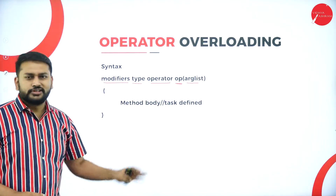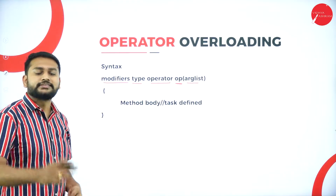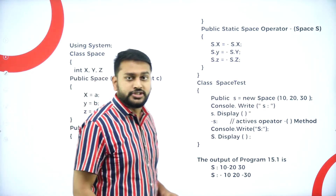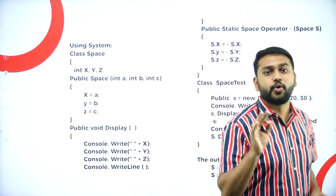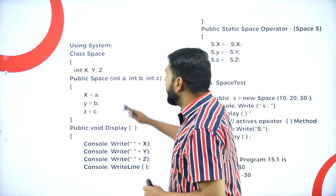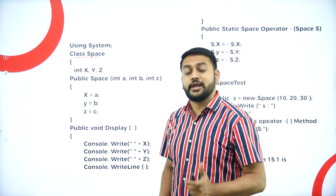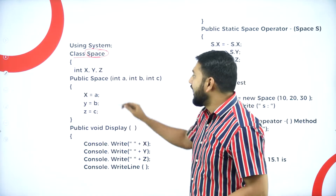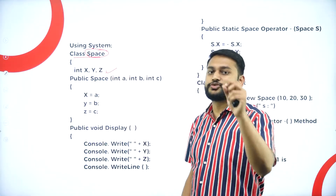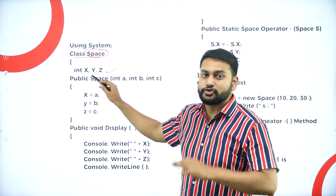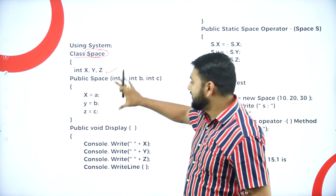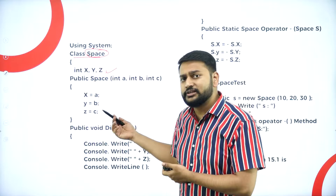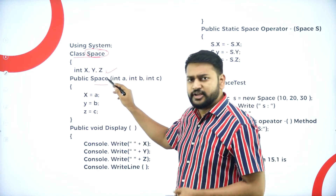Could you please explain with an example? Yes, let me take up an example. Consider this program which performs unary operator overloading. Observe here — I have a class. Can you identify the name of the class? The name of the class is 'space'. I have declared three variables x, y, z of type integer. And then I have one more method — the name of the method is also 'space'. Class name and method name are the same, so that is a constructor method.